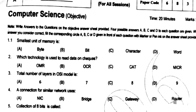Smallest unit of memory is — write option — bit. Which technology is used to read data on a check? Write option is MICR, Magnetic Ink Character Recognition. Total number of layers in OSI model is — write option — 7. A connection for similar networks uses a bridge.